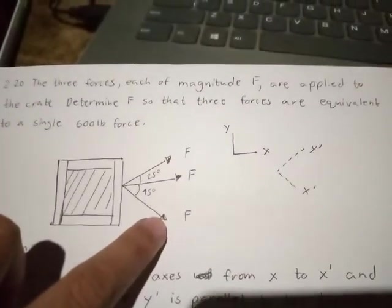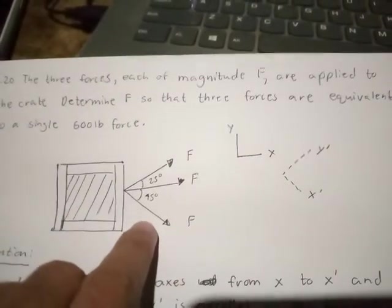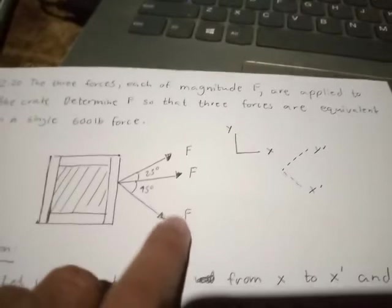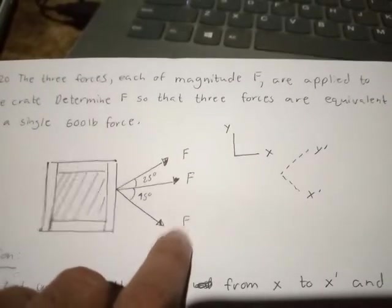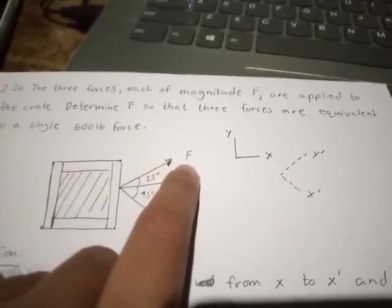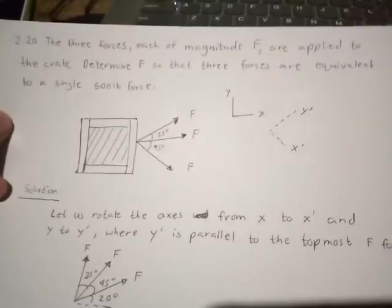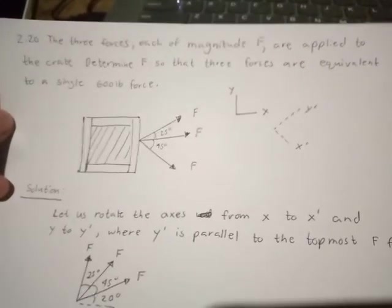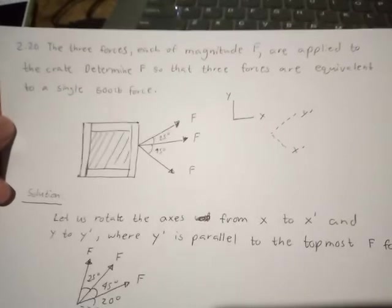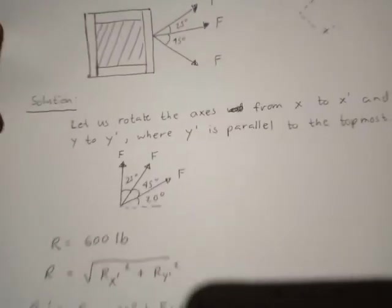This X prime axis is parallel to this lowermost force. Why do we need this? So that we can figure out the X bar component of this F, the X bar component of this force, and X bar component of this force. Please remember that in any way, even if you rotate the forces, any type of forces, their resultant will still be the same.